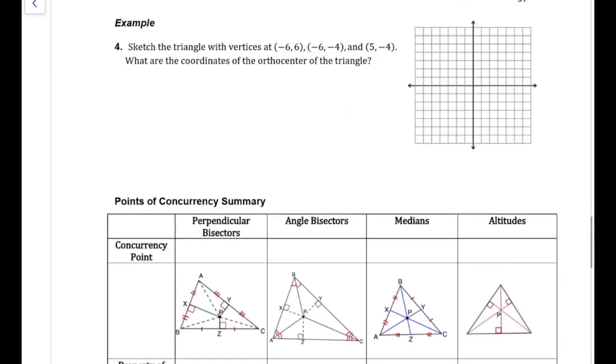So on example 4, we're going to use what we know about orthocenters to find them on this triangle. We're going to plot the three vertices. So we have (-6,6), we have (-6,-4), and we have (5,-4). We draw a right triangle.